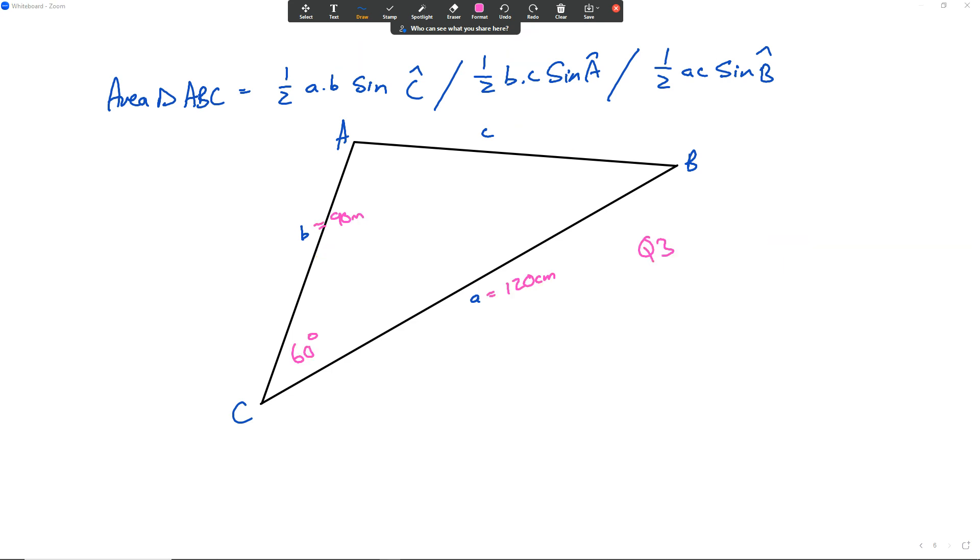So in this question here, which of the following would you use? Would you use formula 1, formula 2, or formula 3 to find the area of the triangle? For this one here, what we have is, again, finding the area of triangle ABC, which is the whole triangle, which is going to be a half of A times B, sine of the angle in between, which is angle C.